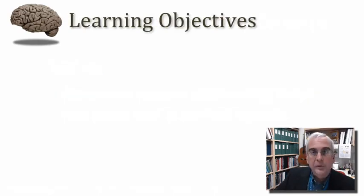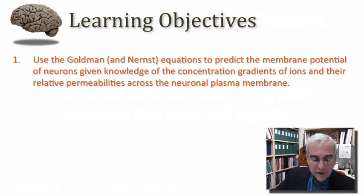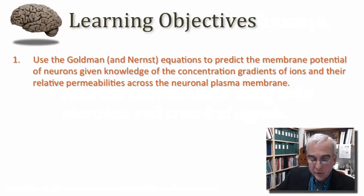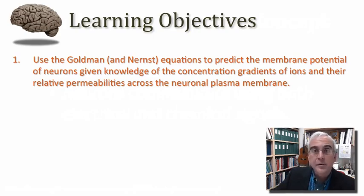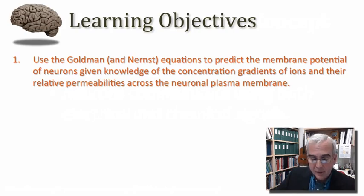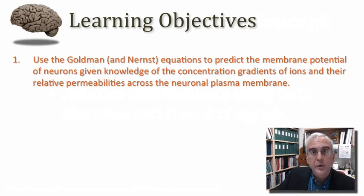We have some learning objectives for you today. I want you to be able to revisit the Goldman and even the Nernst equations and use those equations to gain an even deeper intuition about the membrane potential of neurons, to actually predict that value given knowledge of the concentration gradients of ions and their relative permeabilities across the neuronal plasma membrane.